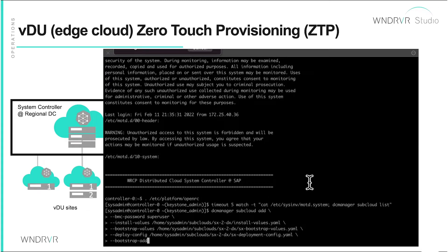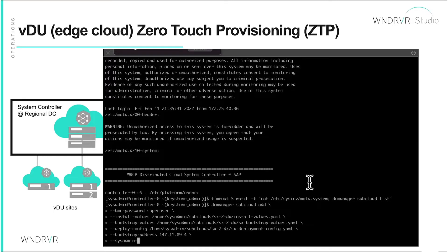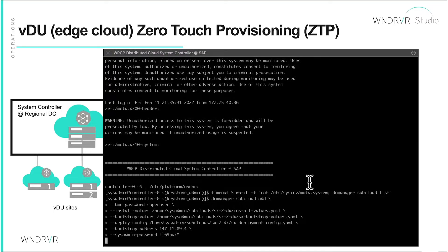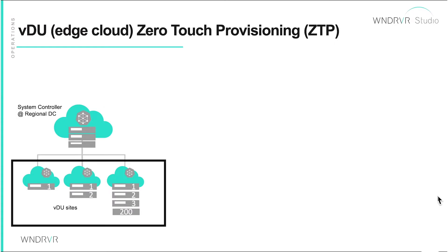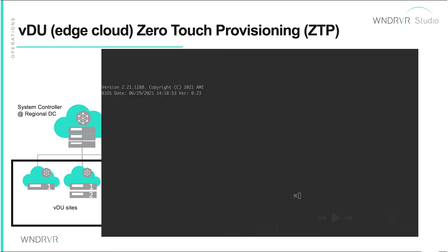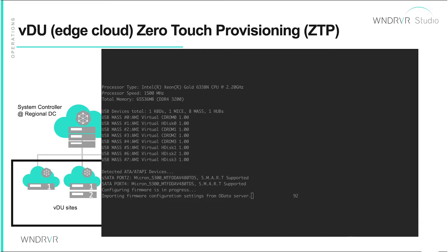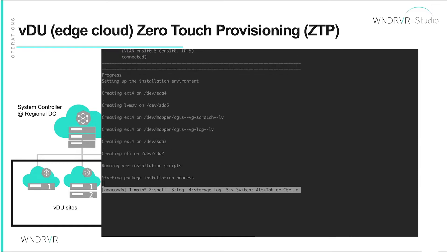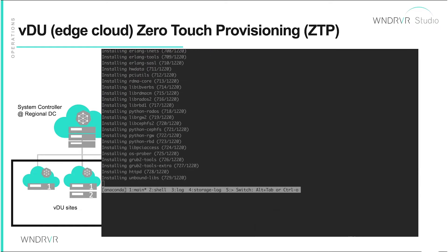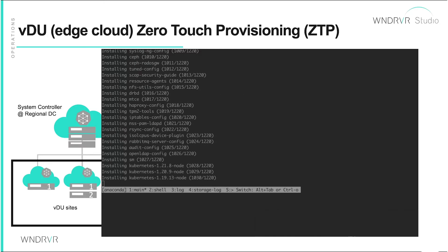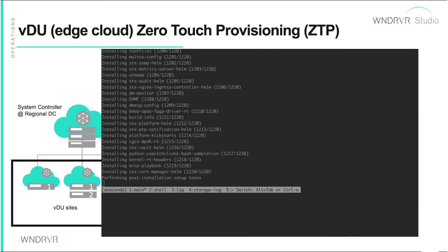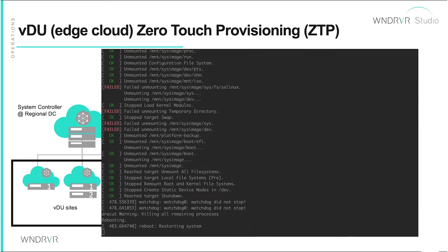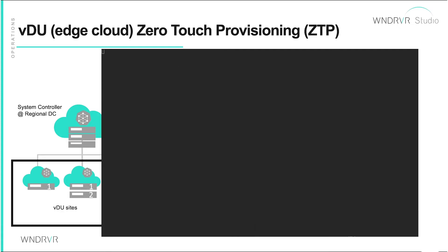And then finally, for the deployed configuration — this is like the CPU memory and networking configurations. It's as simple as that. Once that's completed, we'll look at the edge clouds themselves and at the edge cloud site. If we look at the console right after it is deployed from the central location, we'll be able to see the installation process. In this case, it's all automated. The networking is all done based on the configuration files, fully automated and installed.